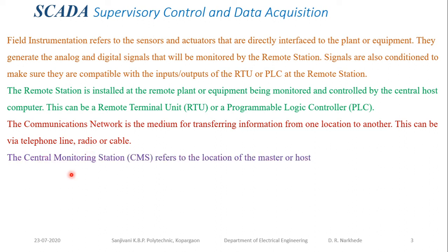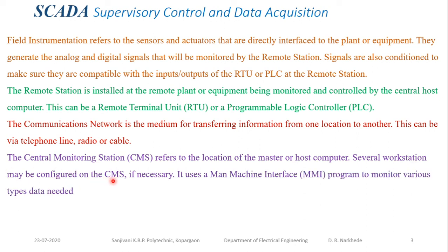The last component is the Central Monitoring Station, or CMS — the location of the master and host computer. Several workstations may be configured on the CMS if necessary. It uses the Man Machine Interface (MMI), sometimes called the Human Machine Interface (HMI). Through the HMI, you can monitor various types of data and control field devices from any location. Whatever happens in the field is simulated on the control system with microsecond time accuracy. In the next lecture, we will discuss field instrumentation in detail.